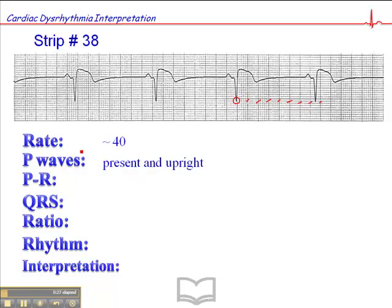P-waves are present and upright and consistent throughout. So the P-wave morphology is consistent there. The PR interval is 0.16 second. The QRS is actually narrow, less than 0.12 second.